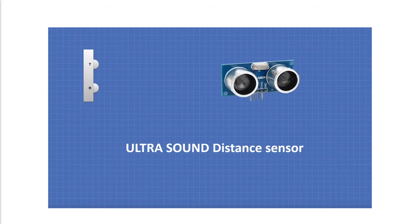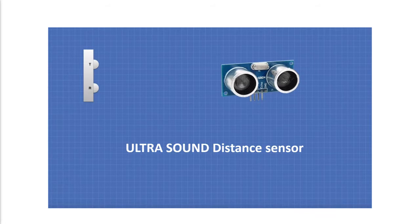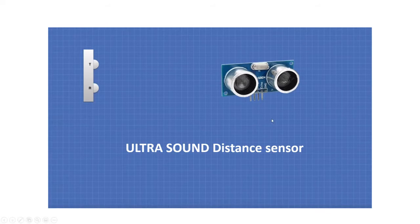I'll be showing you how the actual sensor looks on our table here so you can see it. This is what an ultrasound sensor looks like. It resembles something like a robot face — you can see these two eyes in front of it. This sensor is called the ultrasound sensor, and we're going to explain what it actually does.